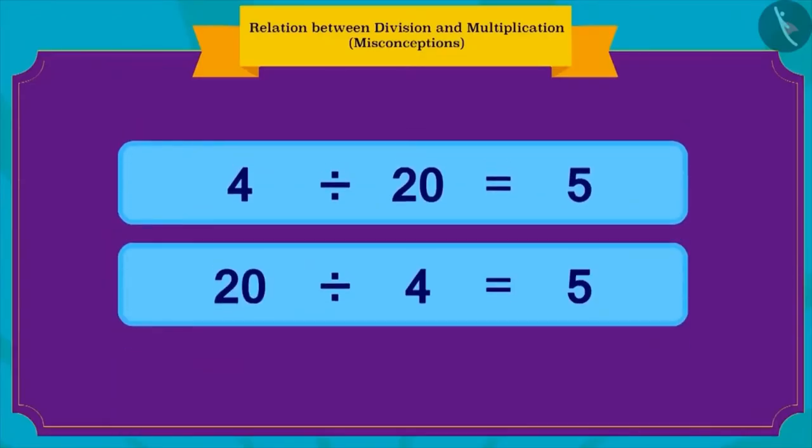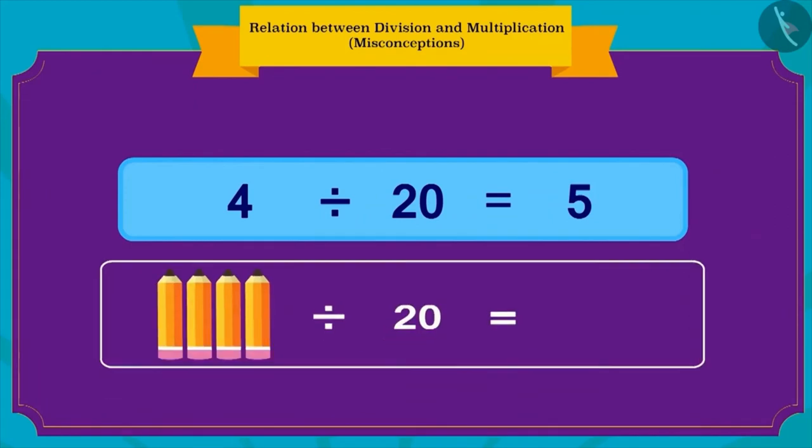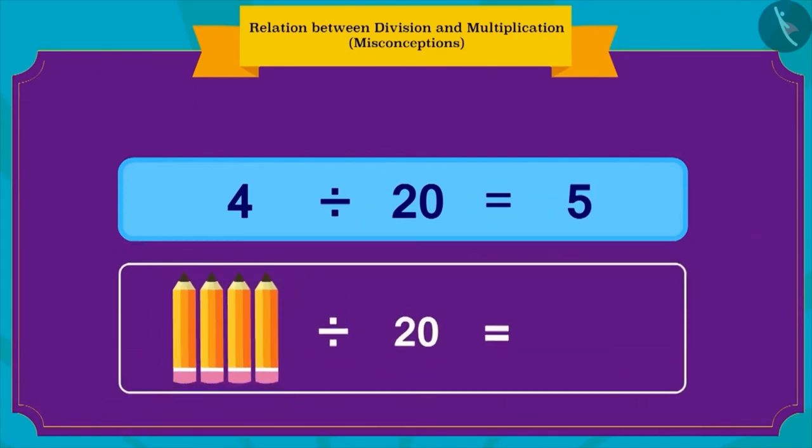Children, is the division written by Raju correct? No, what Raju has written is wrong. But why is it wrong? Because here, Raju is dividing four pencils in twenty rupees. And is this even possible? Not at all. This is not possible.